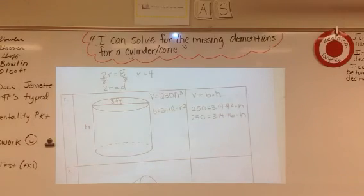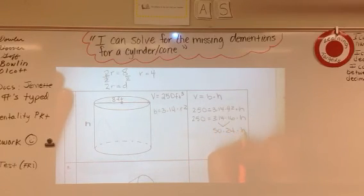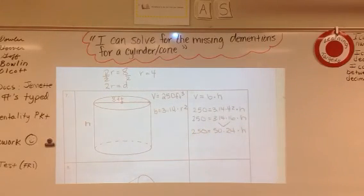Alright, so let's plug some stuff into the calculator. If I do 3.14 times 16, it's going to give me 50.24. Still have that times height there, and it's still going to equal 250.